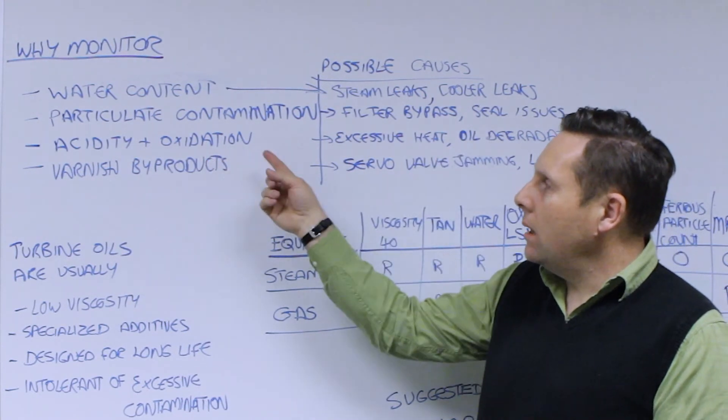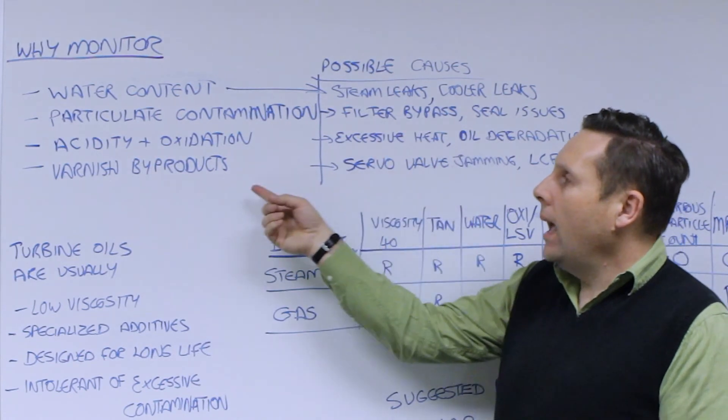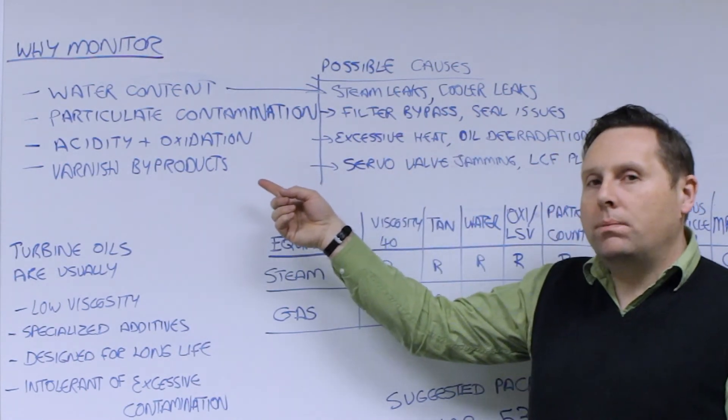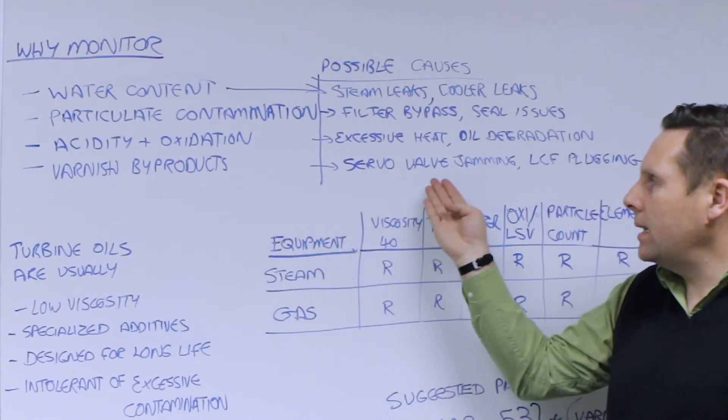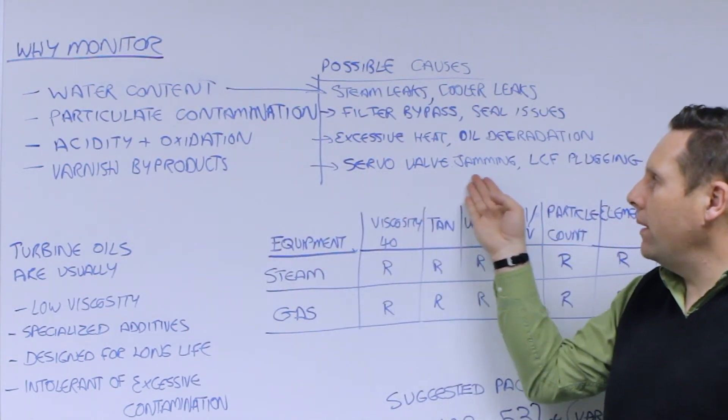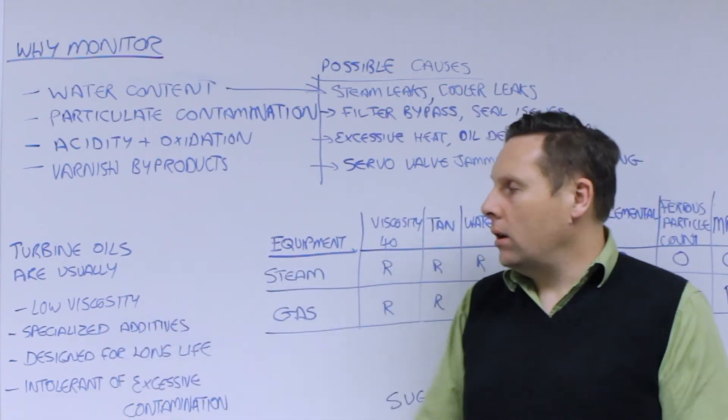We want to always monitor acidity and oxidation because it can indicate excessive heat or oil degradation and also we want to look for varnish byproducts on the certain designs which are susceptible to that because that can lead to servo valve jamming or last chance filter plugging particularly in the hydraulic control systems.